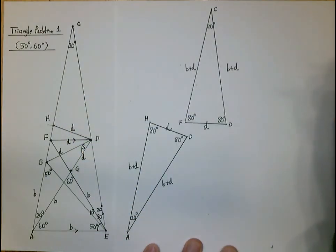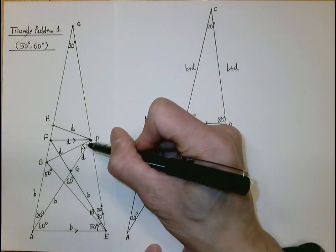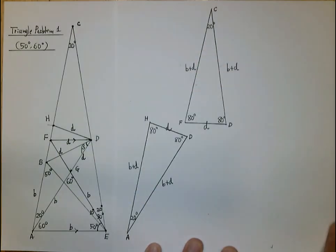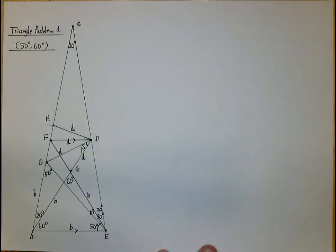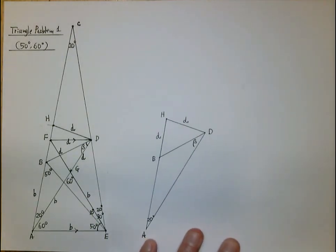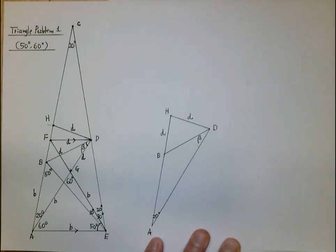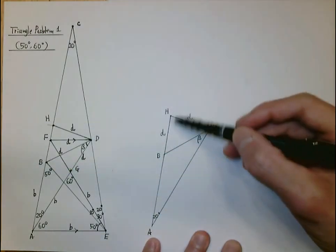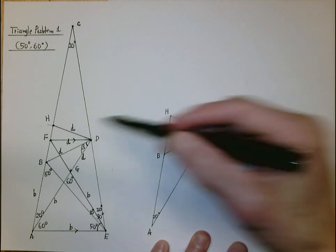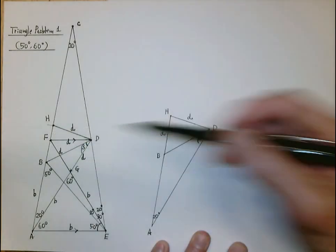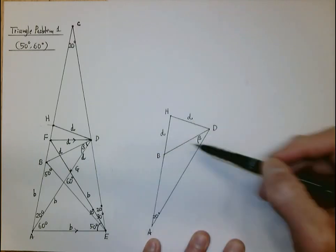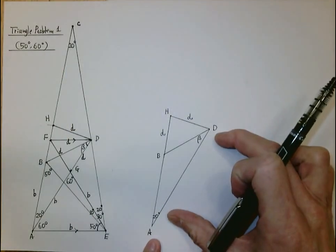We are now very close to solving the problem. The main goal is to find angle beta. I pull out triangle HBD and the larger triangle HDA to see things more clearly. From A to D must equal A to H since the triangle is isosceles, giving b plus d. Since AB is small b, that means BH must be small d.